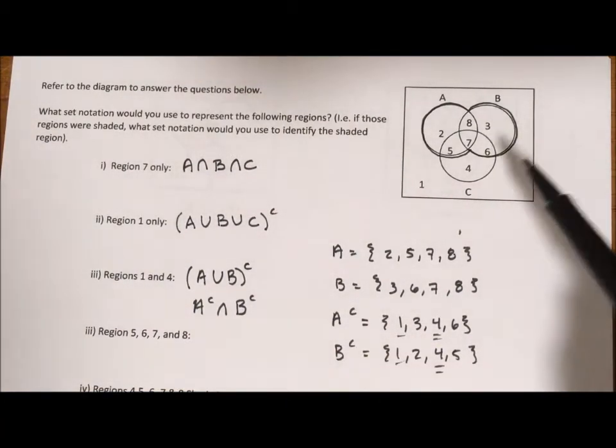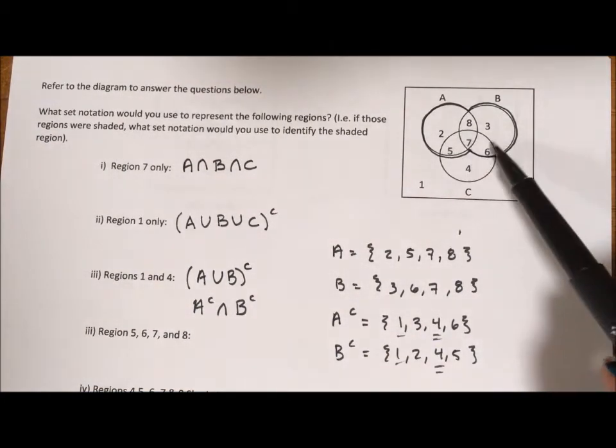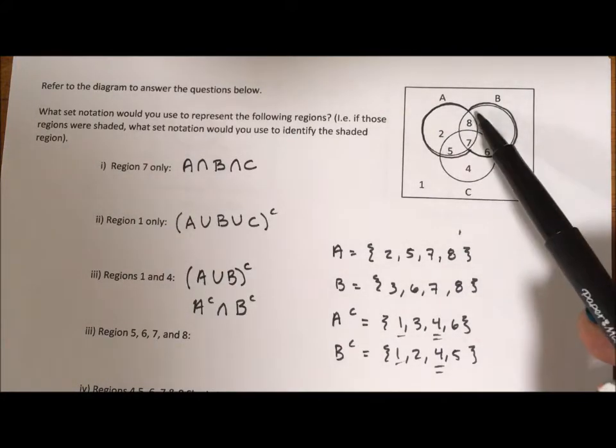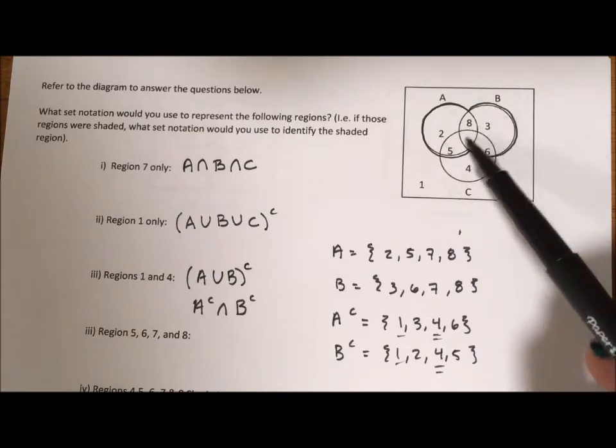Next I have regions 5, 6, 7, and 8. So 5, 6, 7, and 8 is all of the intersection pieces.